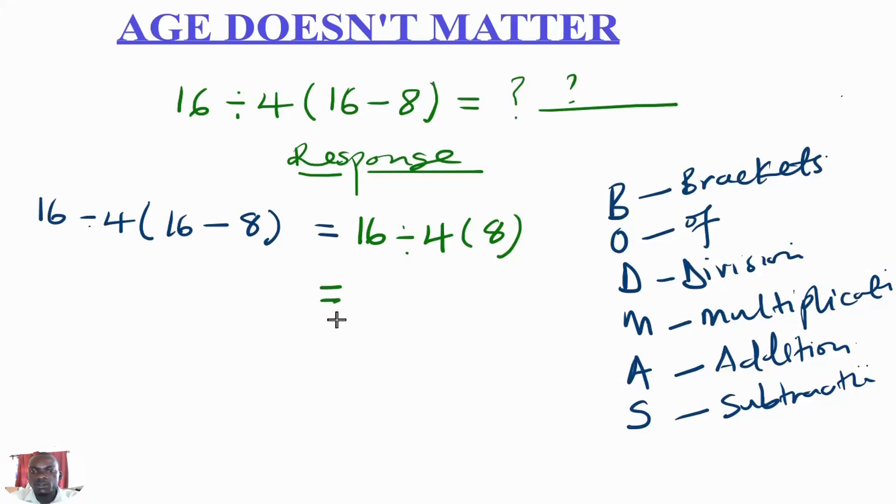So this expression equals, we have finished all brackets, we don't have of, then we have the third one as division. That means before we multiply, we need to first divide. Remember, this is the same as 16 divided by 4 multiplied by 8. So the next step is the 16, we change this division sign to multiplication sign and then we get the reciprocal of 4 which comes to be a quarter, 1 out of 4, multiplied by the 8. So 16 multiplied by a quarter is the same as having 16 divided by 4 then multiplied by 8.